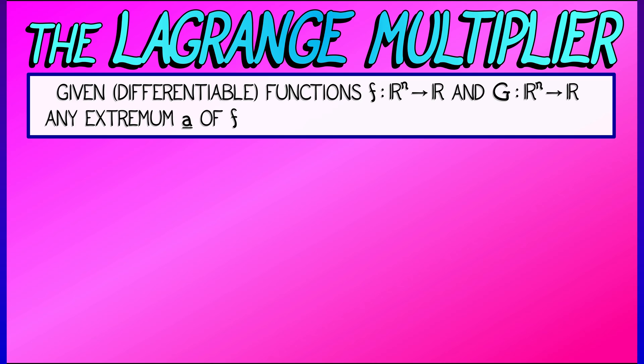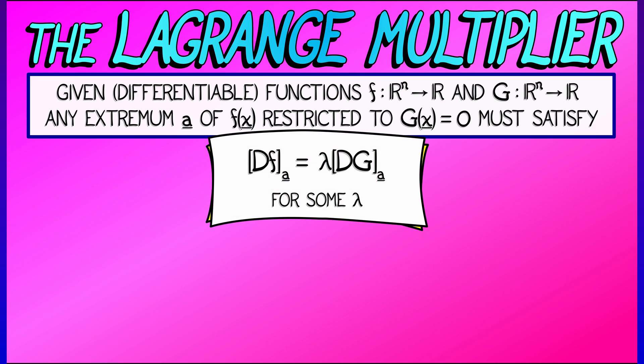If you're given a function f from Rⁿ to R, and g from Rⁿ to R, then any extremum a of f, restricted to the level set where g equals zero, must satisfy the derivative of f at a equals lambda times the derivative of g at a for some scalar lambda. This lambda is the Lagrange multiplier.